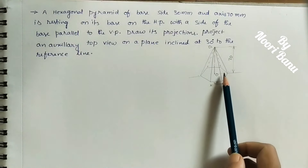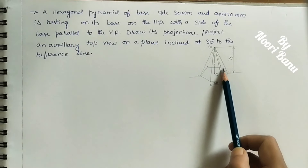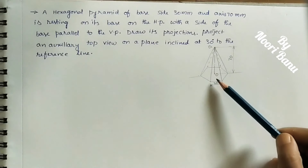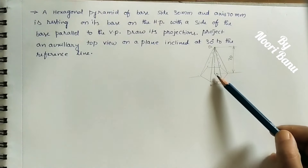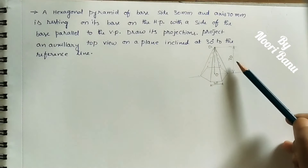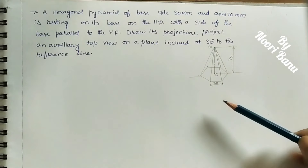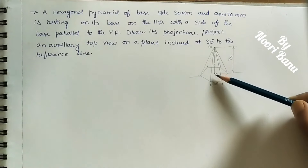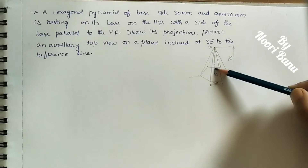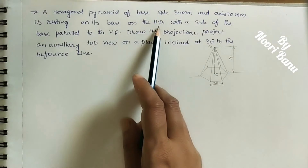Let us take the given data: a hexagonal pyramid of base side 30 mm. As we know, all six sides have the same length, that is 3 centimeters, and axis 70 mm. The axis means the distance between the center of this hexagon and the apex. This distance is called the axis, or we can call it the height of the pyramid. It is 70 mm. The line joining the center to the apex is called the axis, drawn with two long dashes and a dot.